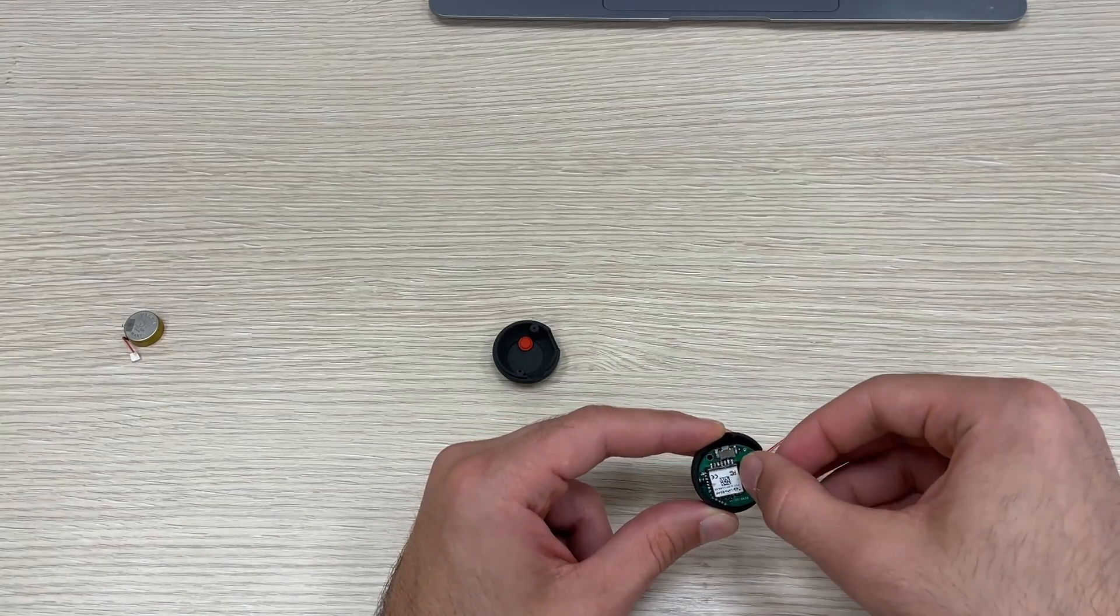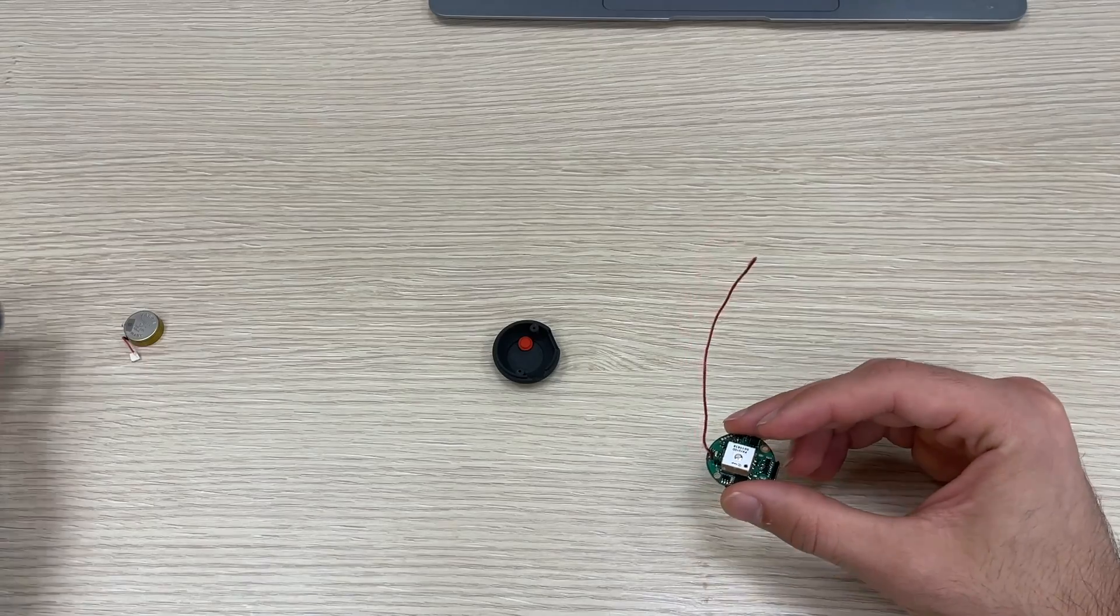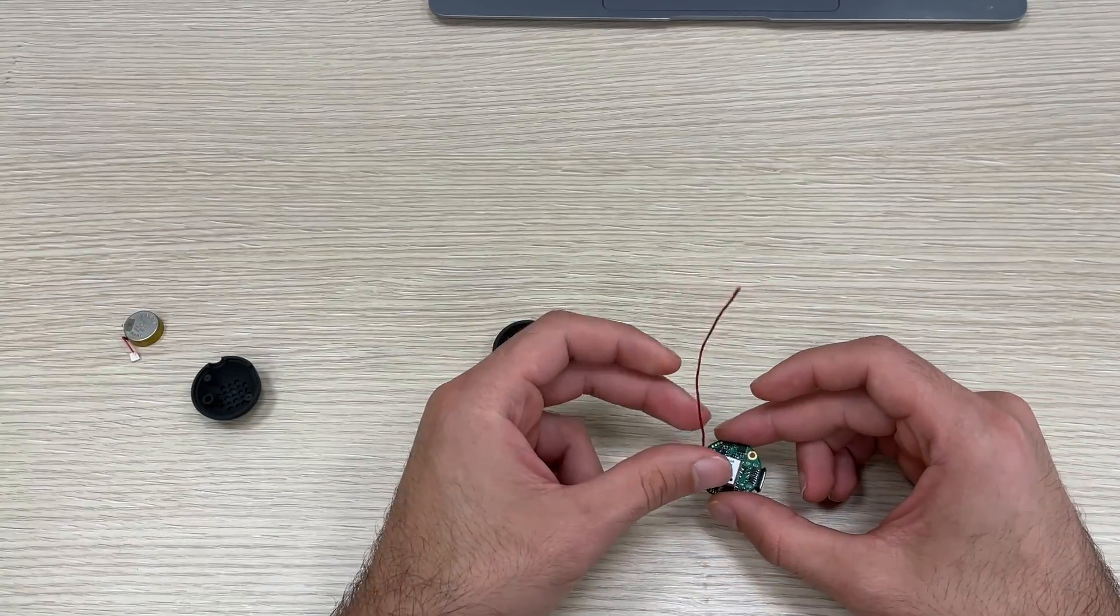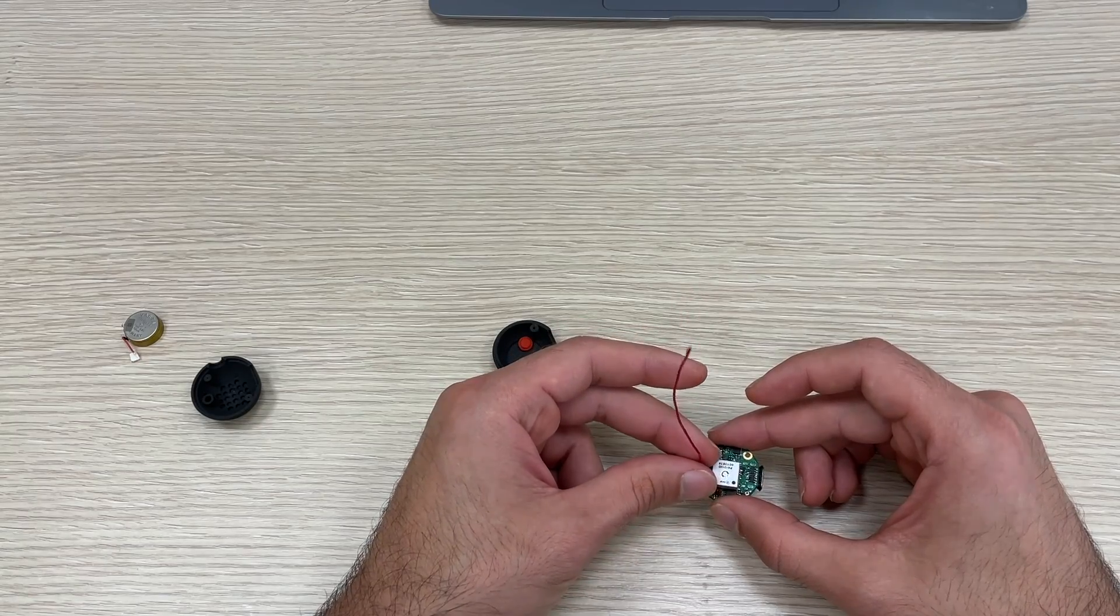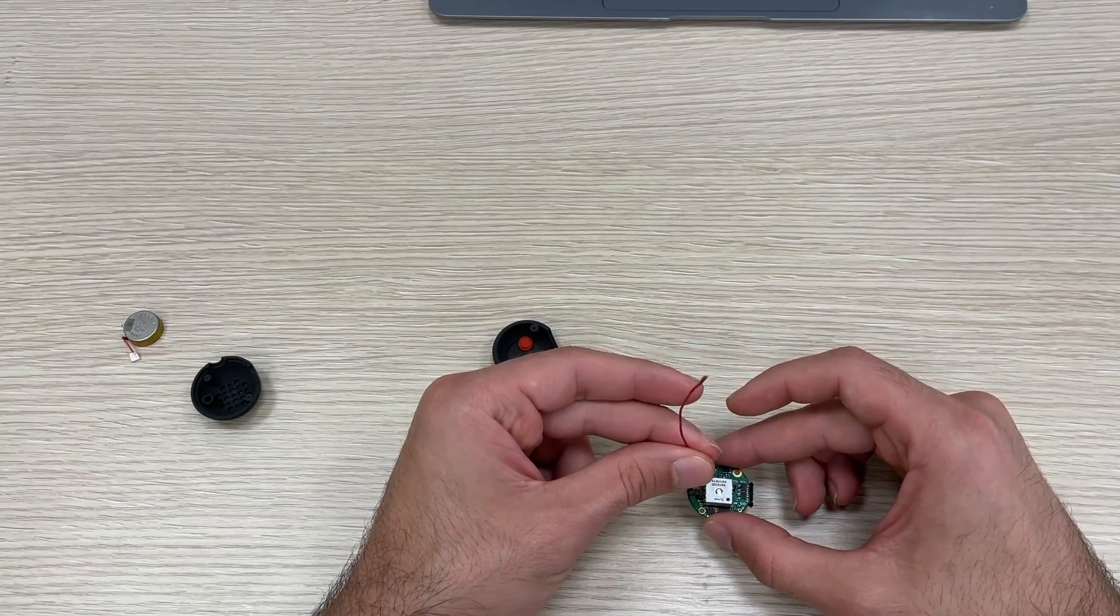Now I will take off the PCB and this is the antenna. It is a wire antenna, tuned for 860 and 915 megahertz.